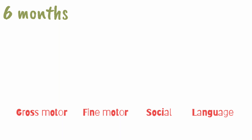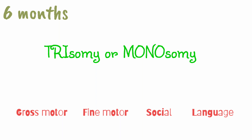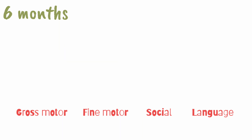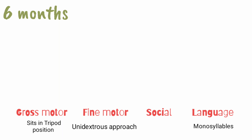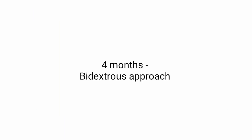For six months, the number six is associated by some people with trisomy or monosomy. To remember the milestones under six months, remember the numbers three and one. Under gross motor comes sits in tripod position — tripod means three. Under fine motor comes unidextrous approach — 'uni' means one. Under language comes monosyllable — 'mono' again means one. Under social, patients of trisomy or monosomy are quite anxious in public, so they have stranger anxiety — again, just for the sake of remembering.